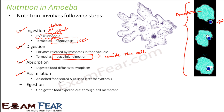The fourth step is assimilation, where the absorbed food is stored and utilized later for synthesis. The food is utilized as and when required — we do not use all the food right away; it is kept in store and utilized whenever needed. Finally, ejection occurs where the undigested food is expelled out through the cell membrane — the wall surrounding the cell. Whatever food is not digested is thrown out of the body.